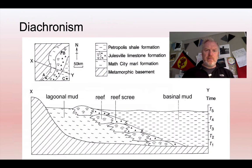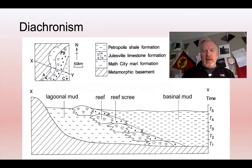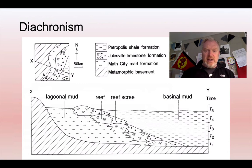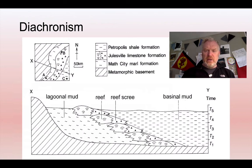Let's have a look at this example — it's a bit made up, but it will illustrate the ideas. We have here, again, shallow water sediments being deposited in a shoreline type environment. Within this area, though, we see different facies, different sedimentary environments: lagoonal muds, reefs, screes that fall off reefs, and then a sort of deeper mud being deposited.